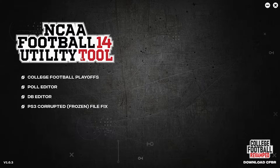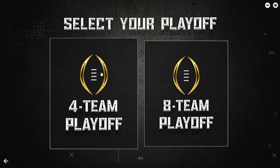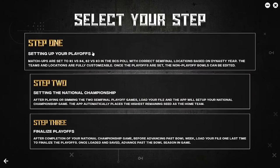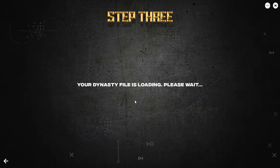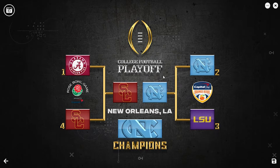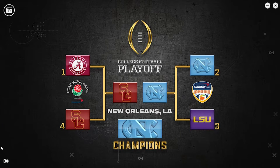Close out of your game, open up the utility tool again — College World playoffs 14, Step 3 — just to finalize it. Open file, user data. You can see North Carolina is champion and USC came in second. Save it, then back out like always.